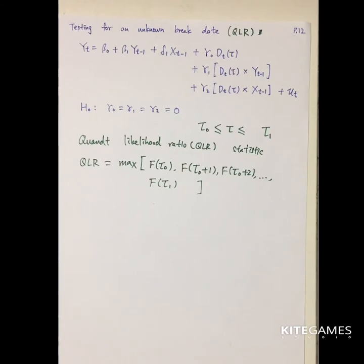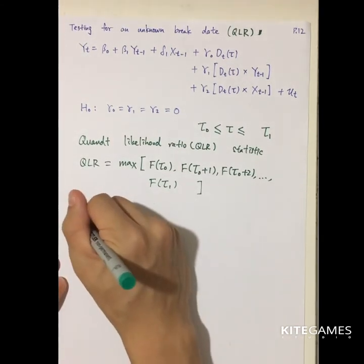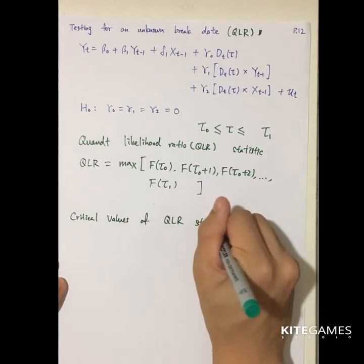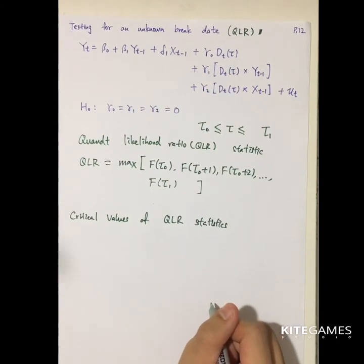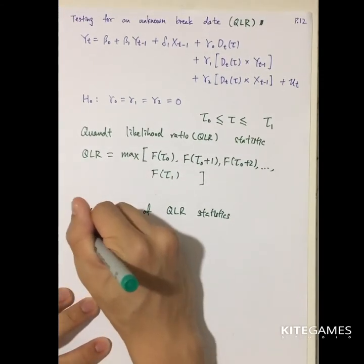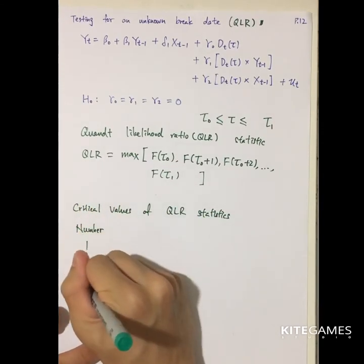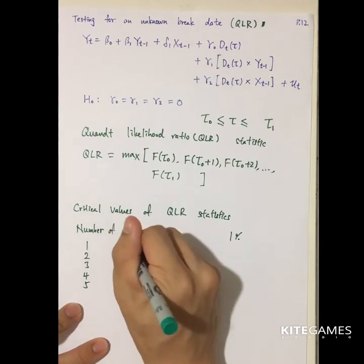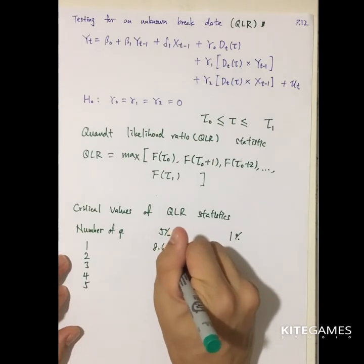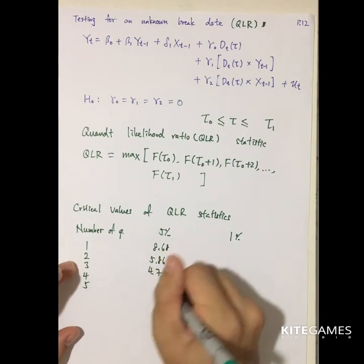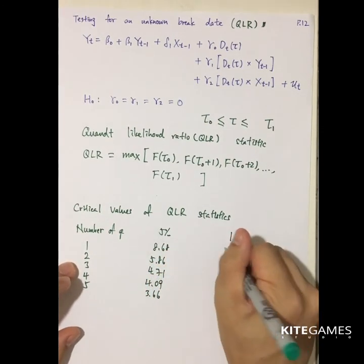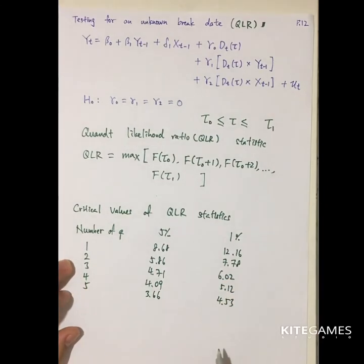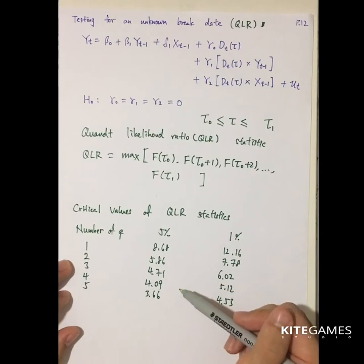After calculating the QLR statistic, you compare it to a critical value, similar to the F-test and T-test. The critical value depends on the number of restrictions Q. With different numbers of restrictions there are different critical values, and for 1% significance the requirement is greater. If your calculated QLR statistic exceeds the critical value, you conclude that there is a structural break.